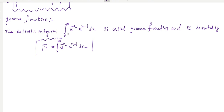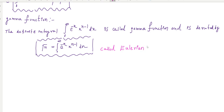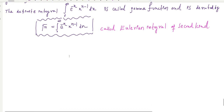The gamma function is also called the Eulerian integral of the second kind. Now let us look at some properties. The first property is: show that gamma(1) equals 1.